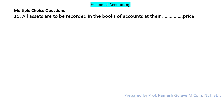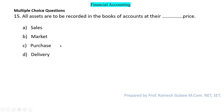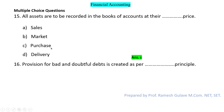The next question says: all assets are to be recorded in the books of account at their dash price. This question is on the historical cost concept, which says all assets are recorded at their purchase price, including incidental charges. So here option C is the right answer.